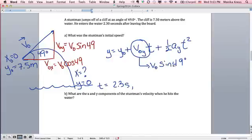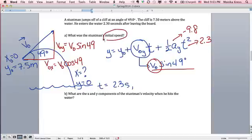Okay. And using this, we know that ay equals negative 9.8 meters per second squared. t equals 2.3. v0y is equal to this. And you can solve for this. This is the initial speed, the magnitude of your velocity vector.